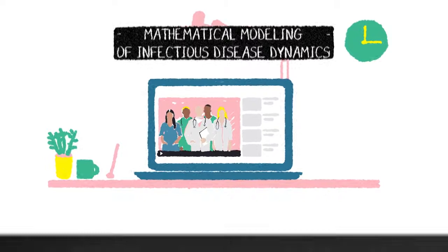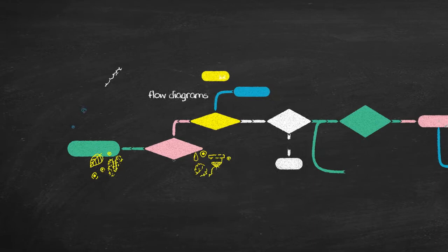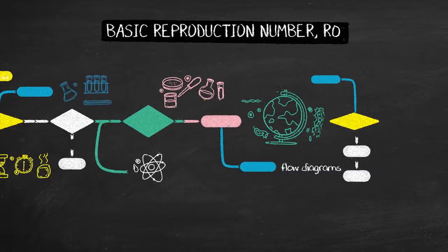Furthermore, we will discuss techniques to derive formulae for the basic reproduction number R0 and the effective reproduction number R. We will describe the principles of estimating these key quantities from data.